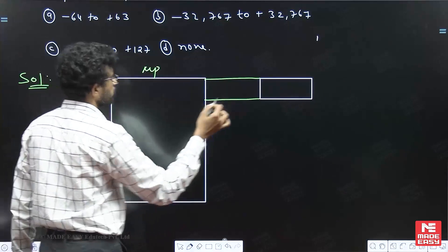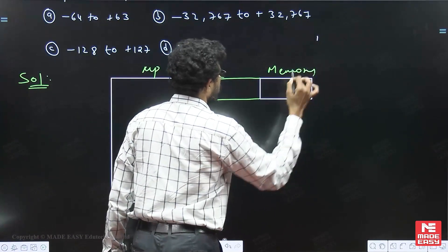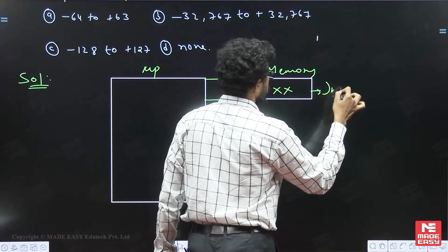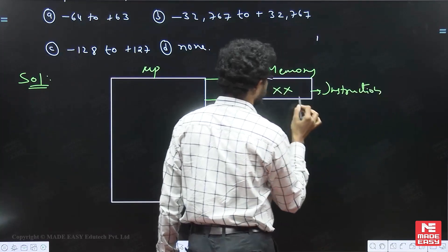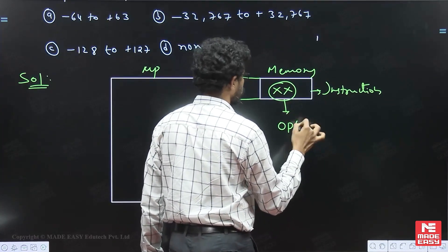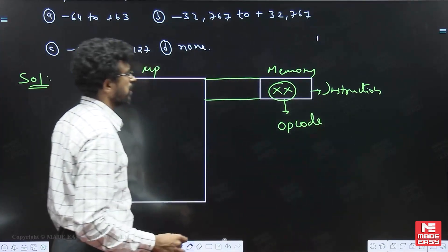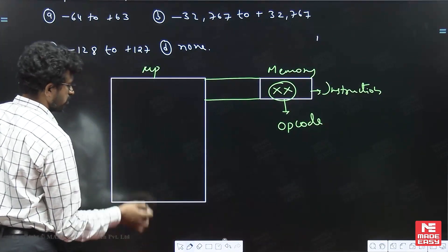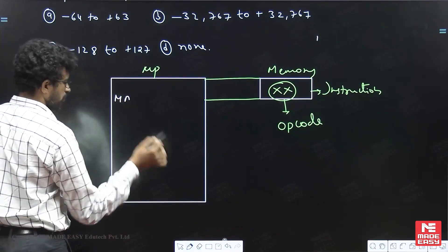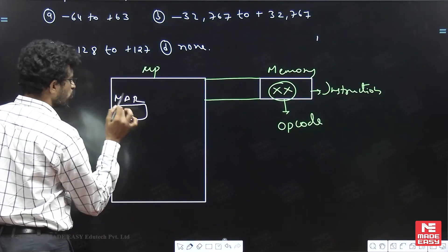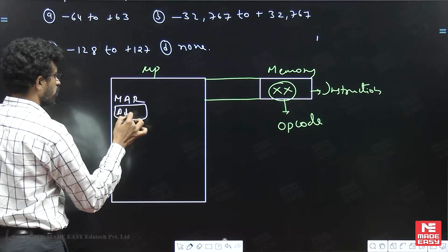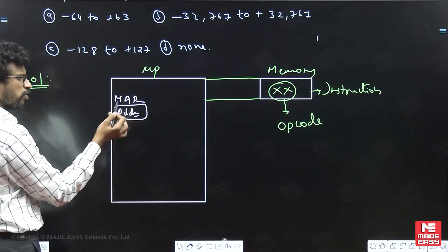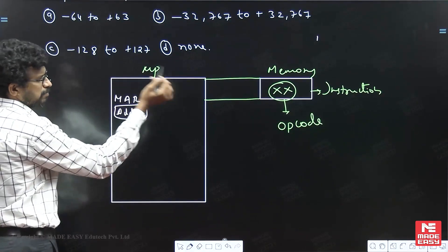This is the given question — this is the microprocessor and this one is memory. Memory has some instruction code — opcode — some instruction code is present in the memory. From the microprocessor, there are two important registers: MAR, the Memory Address Register, which holds any address from the processor to the address bus, holding the address of memory or I/O before it is placed on the address bus.